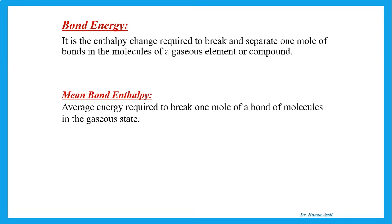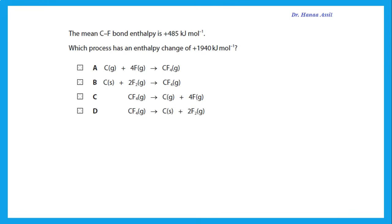Bond energy is the enthalpy change needed to break and separate one mole of bonds in the molecules of a gaseous element or compound. The mean bond enthalpy is the average energy required to break one mole of a bond in molecules in the gaseous state. For example, the mean C–F bond enthalpy is +485 kJ/mol. If the enthalpy change is +1940, that means we are breaking four C–F bonds, which corresponds to answer C.